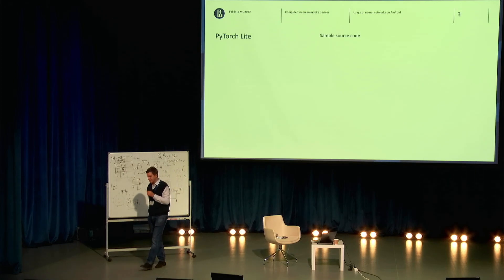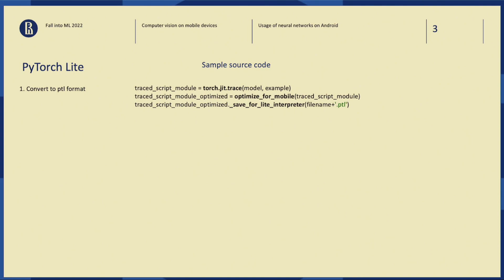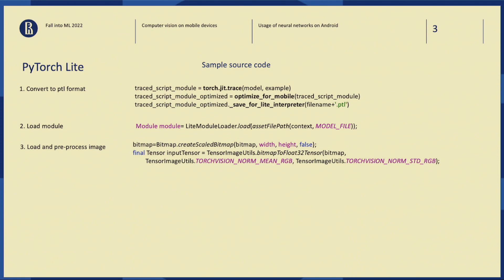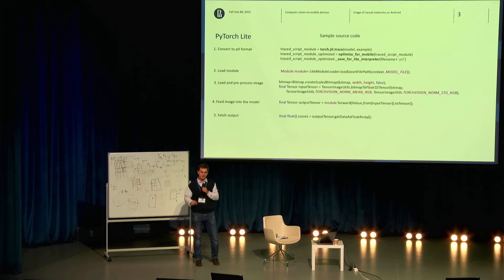Here I show some examples of how to do it with PyTorch Lite or TensorFlow Lite. It's very easy to find examples. Speaking about PyTorch, it's really easy — if you have a model, it's several lines of code to convert it to PyTorch Lite format, load the model, load the image, apply some transformations, run the inference, and get the results. It's really simple — you feed the image, you get the results.